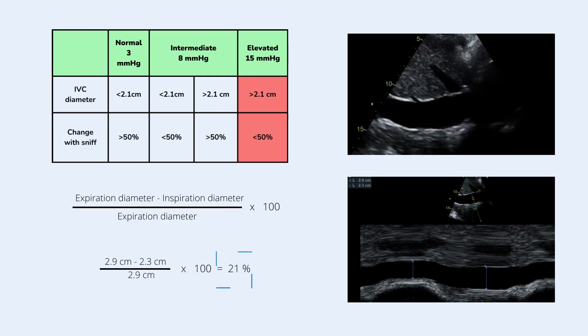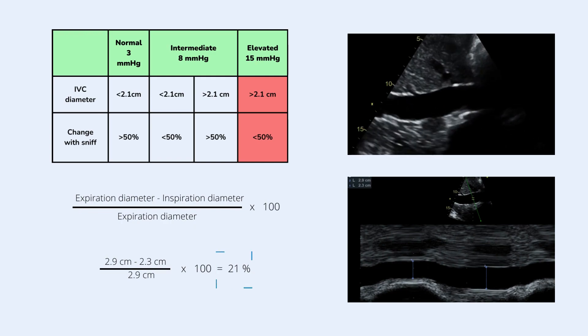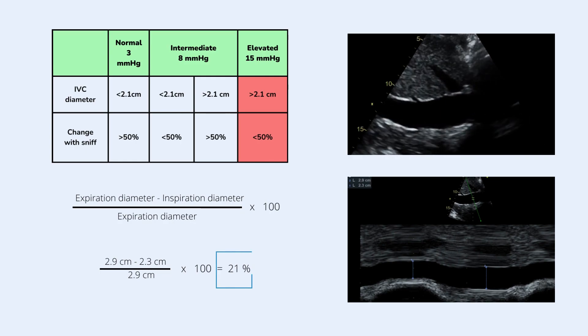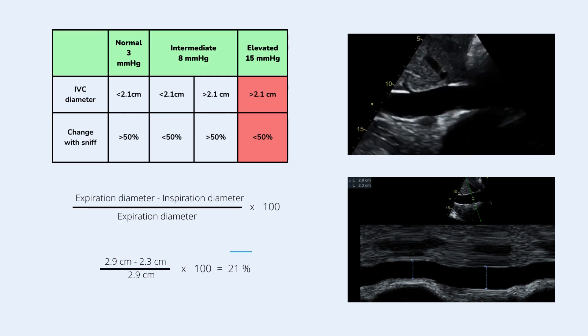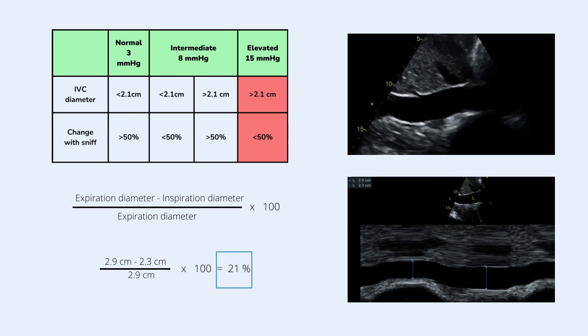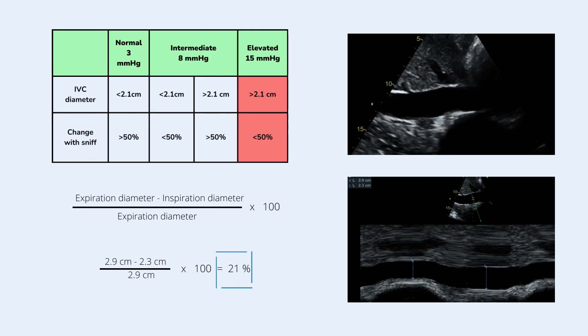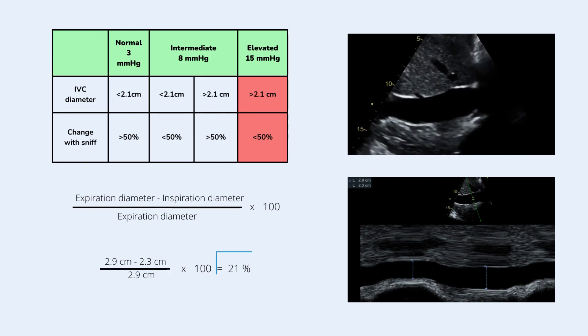An expiration diameter of 2.9 cm and inspiratory collapse of 21% would fall on estimated RA pressure of 15 mmHg. Therefore this patient has an elevated RA pressure.